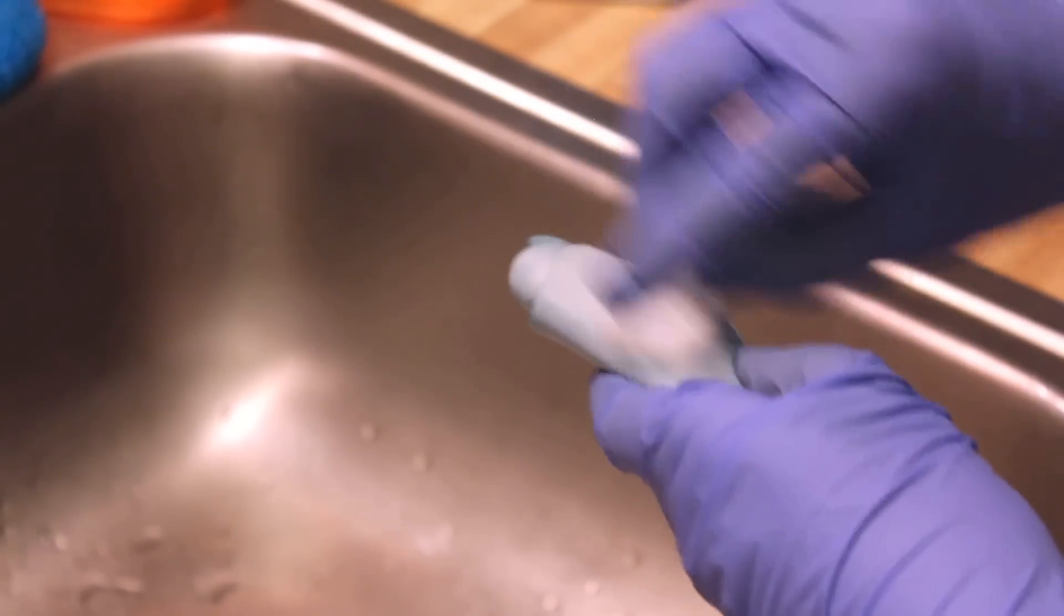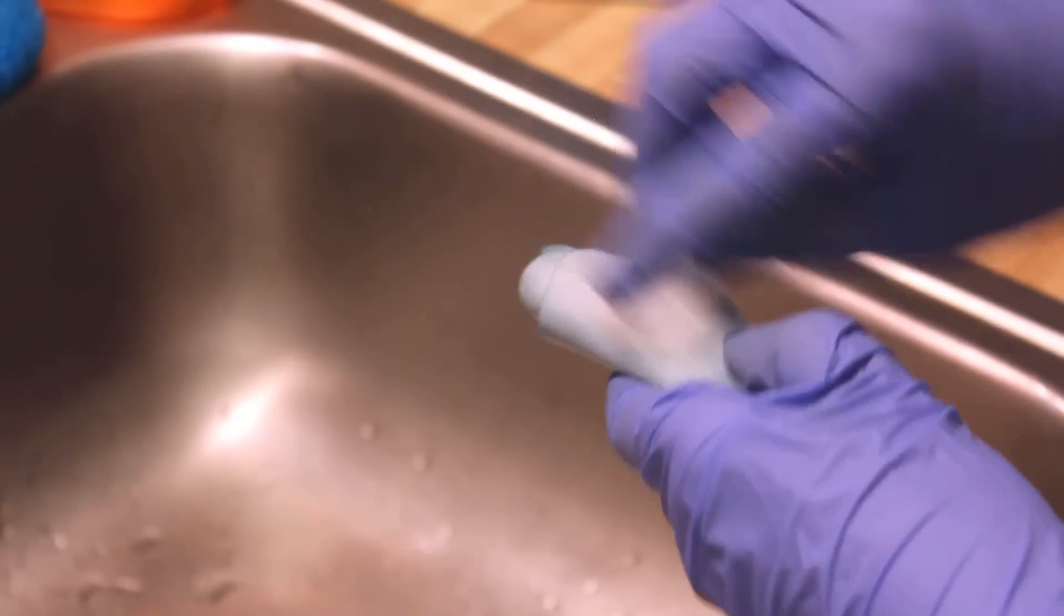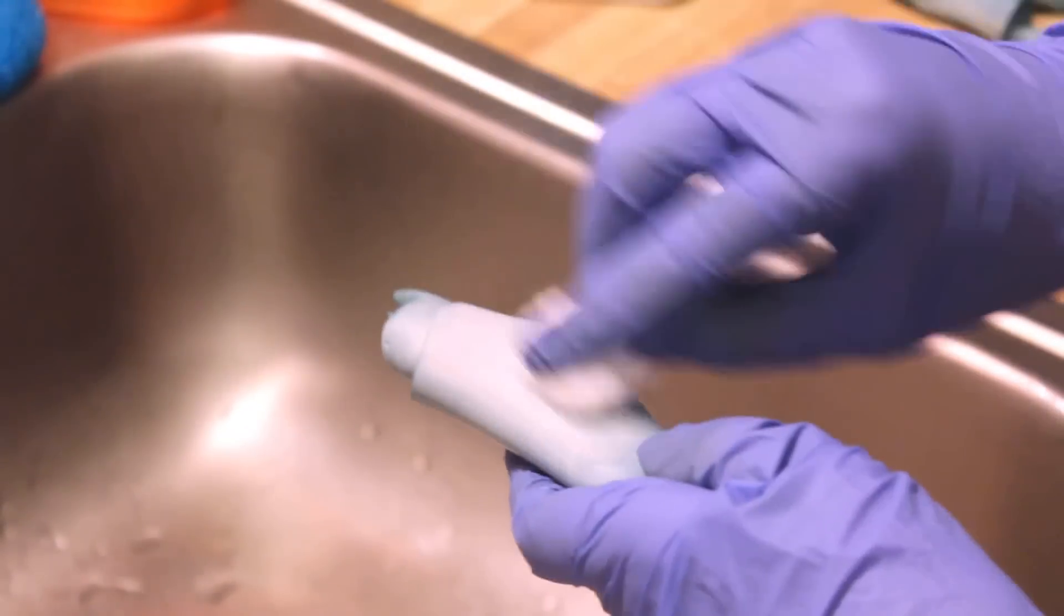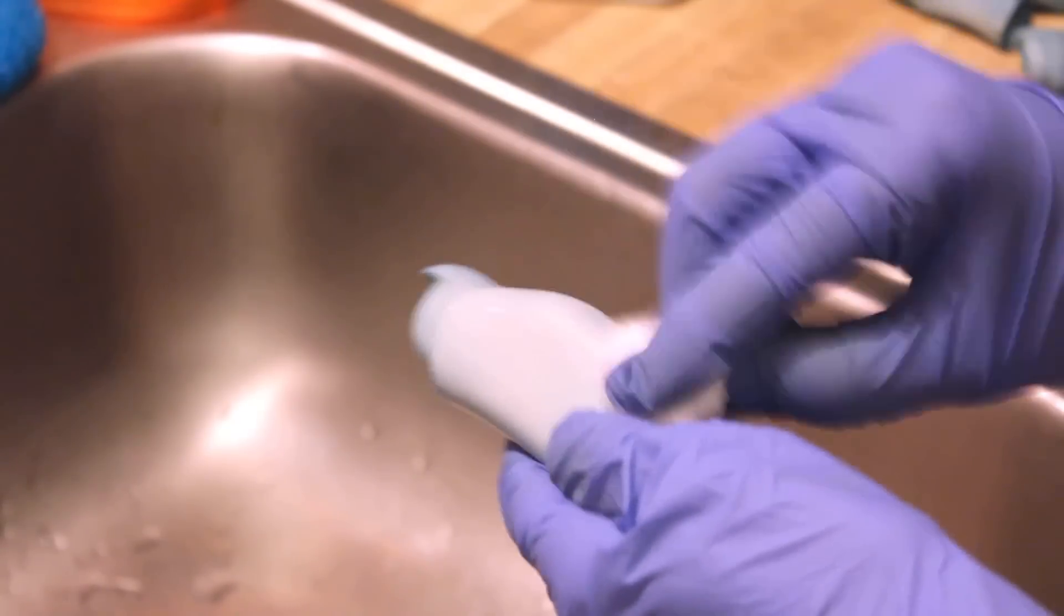I start with alcohol on a cotton ball and get to rubbing. I'm actually a bit surprised. The color is definitely lifting. The leg piece is looking lighter already, and there's a lot of dye coming off on the cotton ball too.